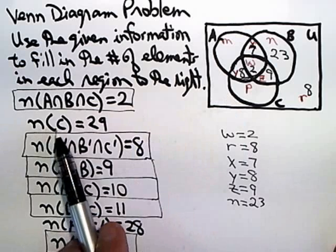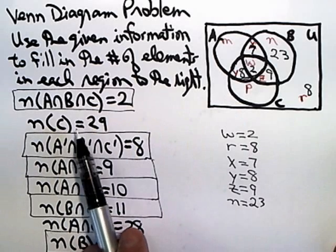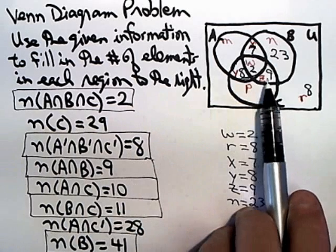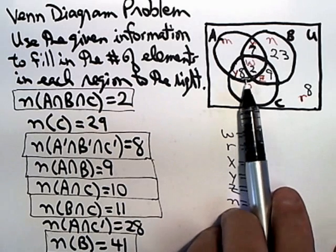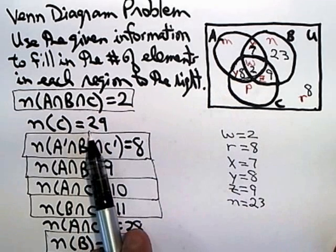And I sort of see the same thing here. They tell me that there are 29 elements in set C, and I know everything but P. So if I look at what I already know, 9 and 2 is 11, plus 8 is 19. And I want them to add up to 29.